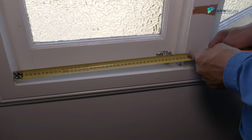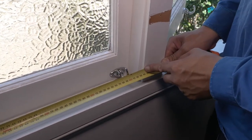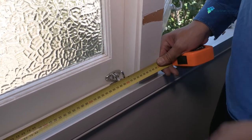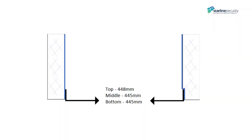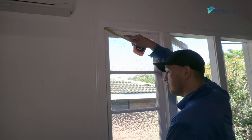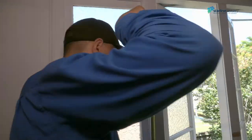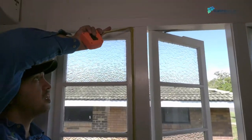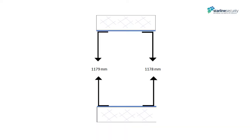To find the screen ordering size, measure the width inside the window reveals. We have opening sizes of bottom 445mm, middle 445mm and the top is 448mm. To find the drop, measure both sides from the head to the sill. The left-most measurement is 1179mm while the right-hand side is 1178mm.